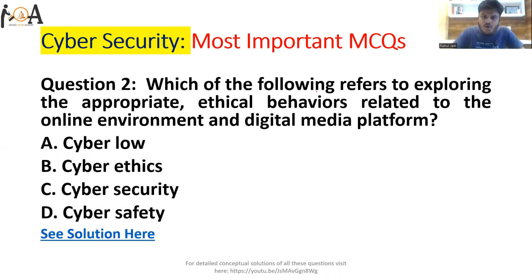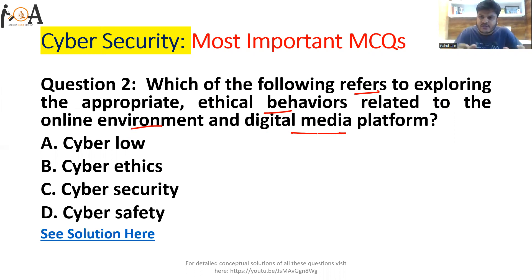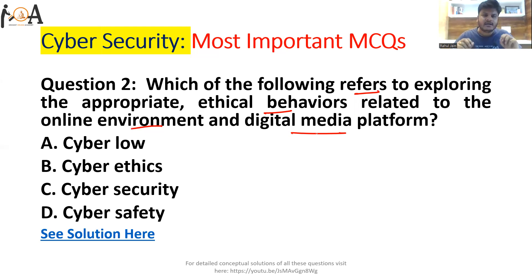Question two: which of the following refers to exploring appropriate ethical behavior related to the online environment and digital media platforms? Ethical behavior here means if you are using pictures, graphical media, or content from any website or source, you must mention their name, avoid plagiarism, and maintain originality as much as possible. Such behaviors come under cyber ethics.